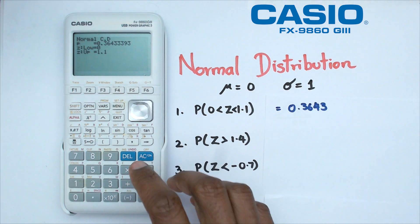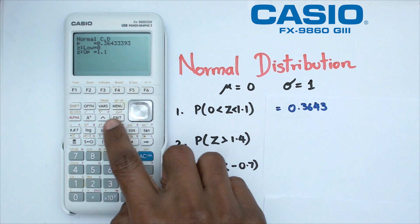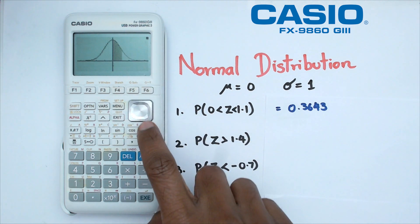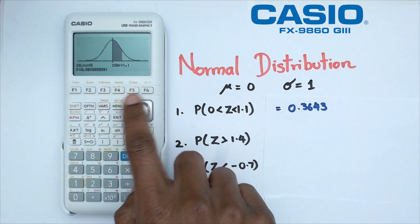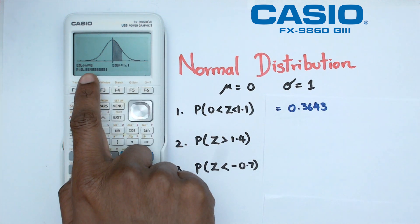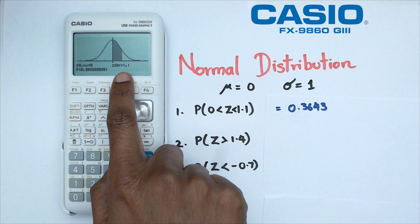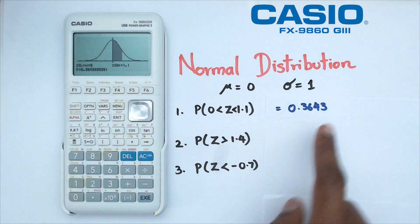Now let's say we actually want to see what this looks like as a diagram. Click on exit and click on F6 for draw and there you go. It's going to give you the diagram of the bell curve and it shows you that the lower limit is zero, the upper limit is 1.1, and the probability which is 0.3643.